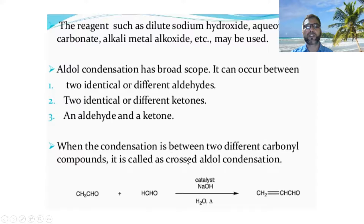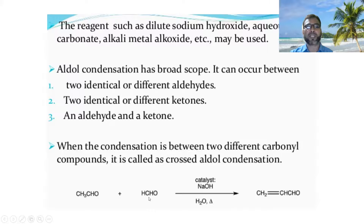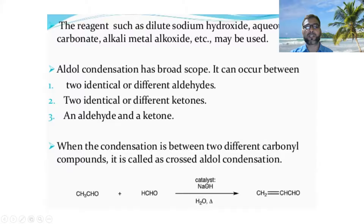Cross-aldol condensation. Now, you can see this compound is formaldehyde, and this compound does not have alpha-hydrogens, but this other compound does. So, one compound has alpha-hydrogens and this one does not. Both are aldehydes — one is formaldehyde and the other is acetaldehyde, and they undergo condensation. This is not self-condensation because the two compounds are different; that is why we call this a cross-aldol condensation. So, acetaldehyde and formaldehyde undergo condensation in the presence of base, and it gives an alpha-beta unsaturated aldehyde.